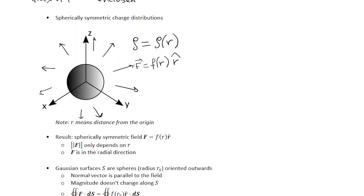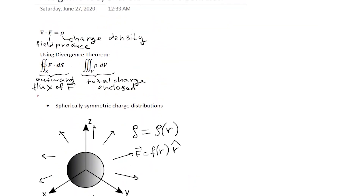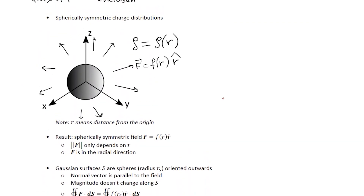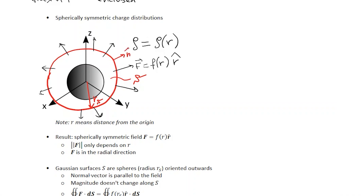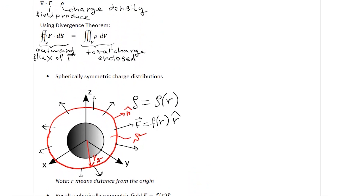If F of R is negative, then the field is going to be converging on this sphere. Gaussian surfaces that are good for this kind of problem would be spheres. The reason they are a good choice is that the vector field F is parallel to the normal vector of this surface, and also the magnitude of this field is constant everywhere on this surface. So the flux integral calculation on the left-hand side becomes much simpler.